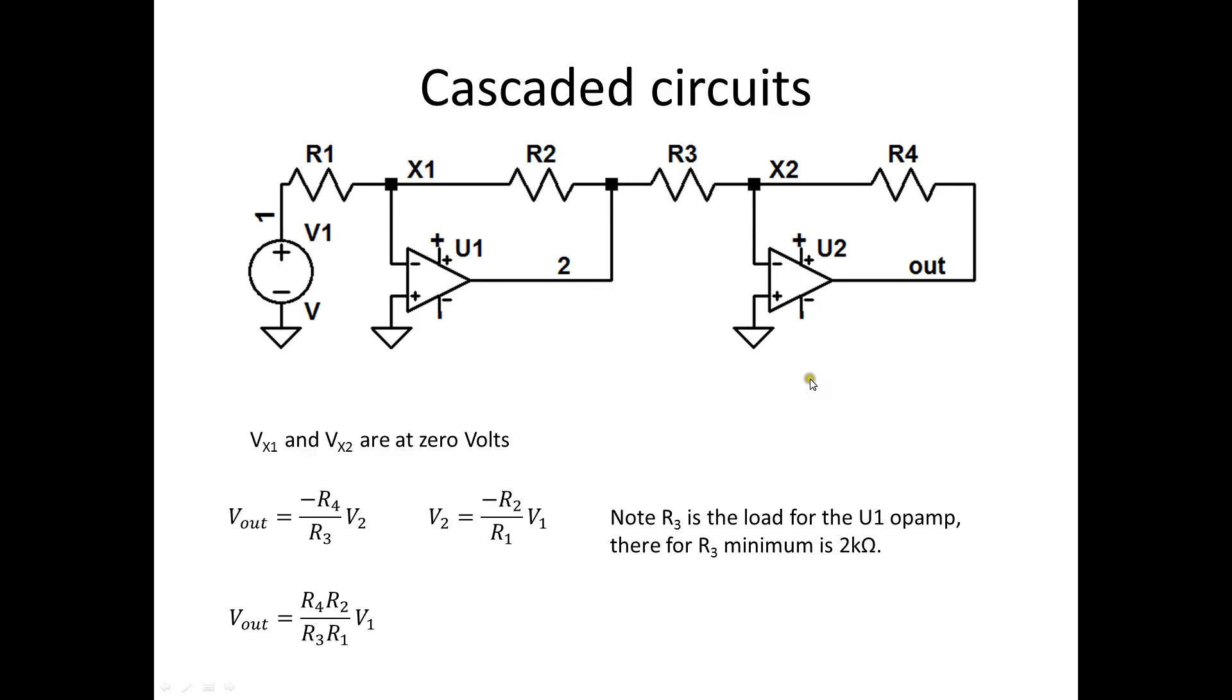So, this would act like U1's load resistor. So, that means this R3 in design has to be greater than 2 kilohms. Otherwise, we violate most of the load resistance requirements in the op amps that we've studied. So, all we have to do now is substitute it in and we get Vout.